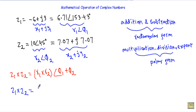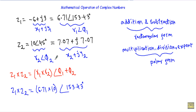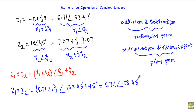Here r1 is 6.71 and r2 is 10. The phase angles are 153.43 degrees and 45 degrees respectively. So Z1 into Z2 gives a total amplitude of 67.1 and a phase angle of 198.43 degrees. You may convert this into rectangular form.